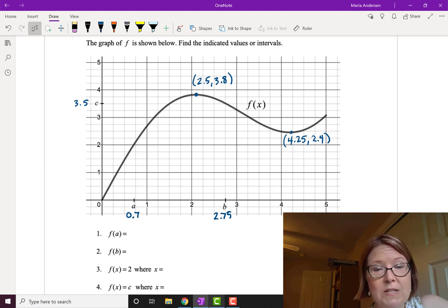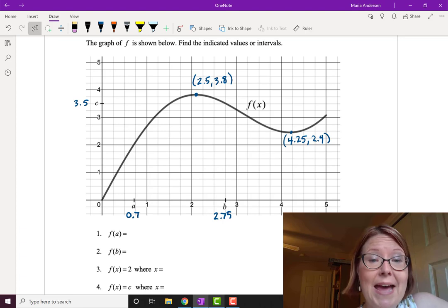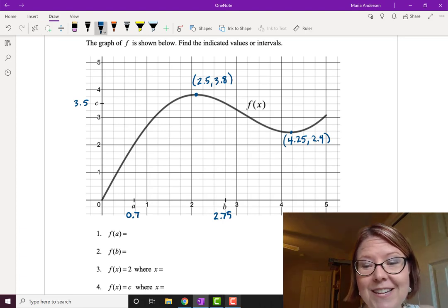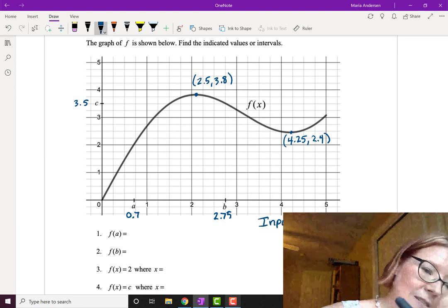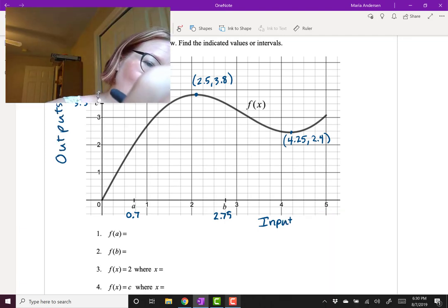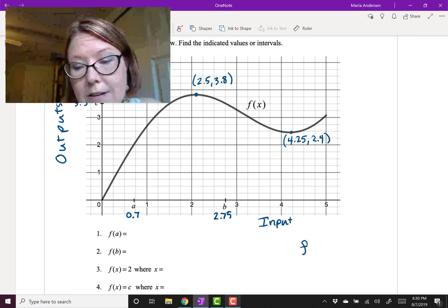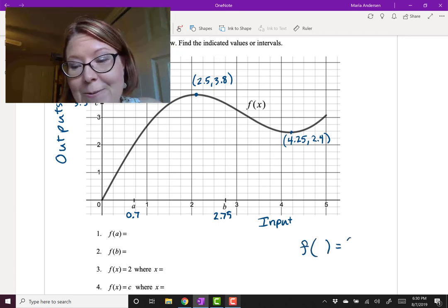Now the first thing I'm going to do is find f of a. This means that the input is a and I'm asking for the output. So this is a good time to remember that the inputs are always on the horizontal axis, and the outputs are always on the vertical axis. Also that when we write function notation, something like f of something equals something, the input is the part in the first parentheses. f of the input equals the output.